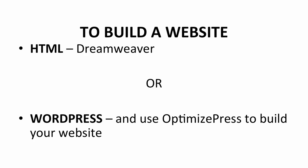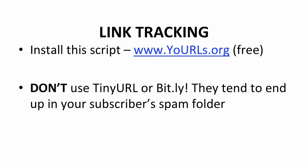To build a website, you can use Dreamweaver to build the HTML. It's reliable and also a popular choice, but you would need some training and the know-how. So you can choose Dreamweaver or you can go for WordPress, which is a little bit easier to learn. WordPress also features OptimizePress that will help you create a landing page. Link tracking will also play a big role in your business as you want to know how many visitors you have. It will also help you evaluate your own performance. For this, I recommend YoUrls.org. It's free to use. Do not use TinyURL or Bitly when you want to send links — they tend to end up in your subscriber's spam folder.